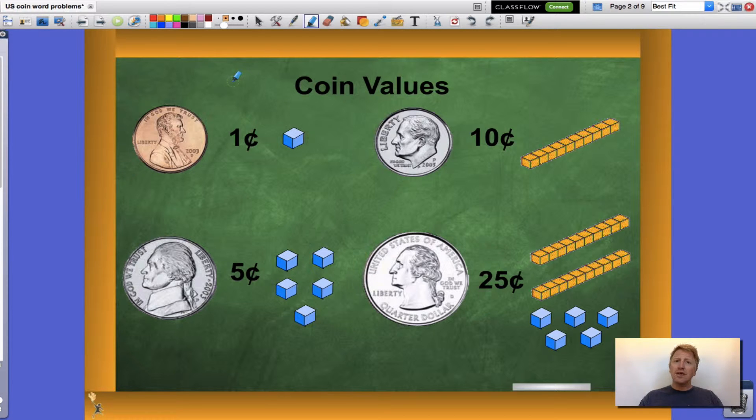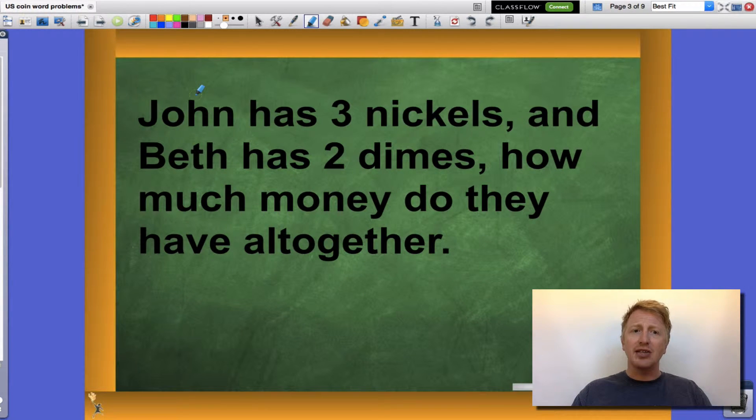So let's look at our first problem. Read along with me guys. John has three nickels and Beth has two dimes. How much money do they have altogether? Now before I start actually adding, I want to take a look at are there any signal words that let me know what I should be doing? Altogether. Altogether is a signal word that lets me know I'm combining John's nickels with Beth's dimes, or in other words, I'm adding them together.